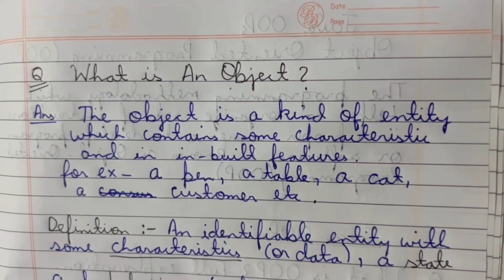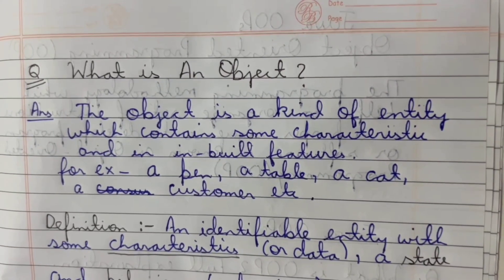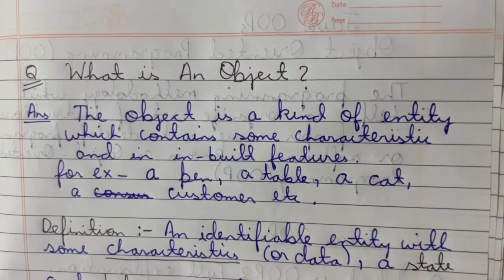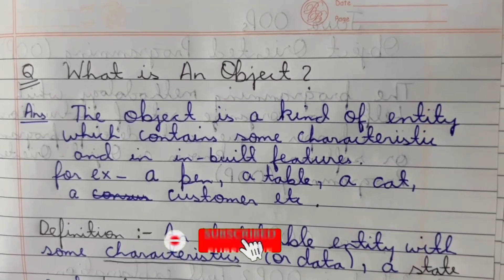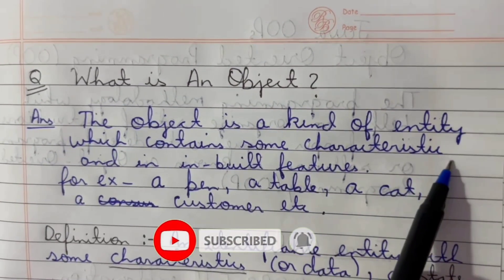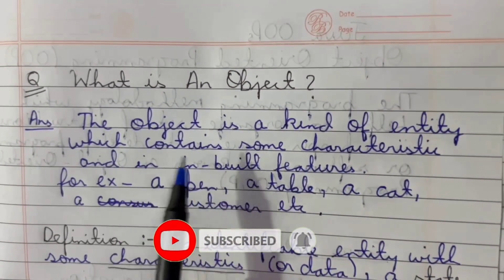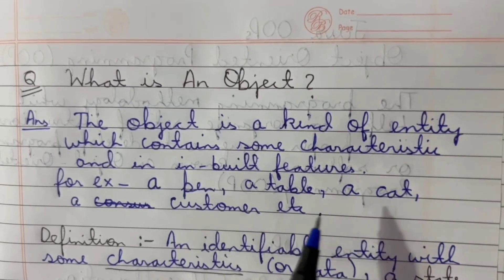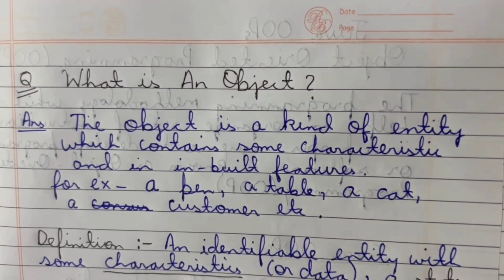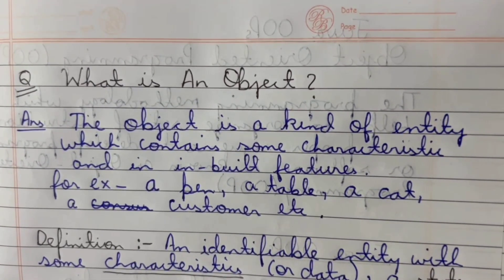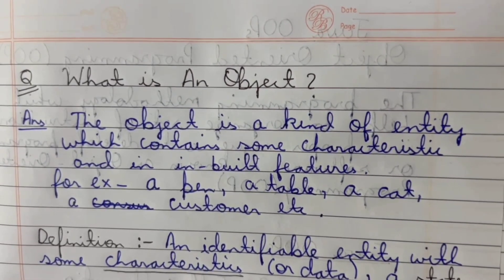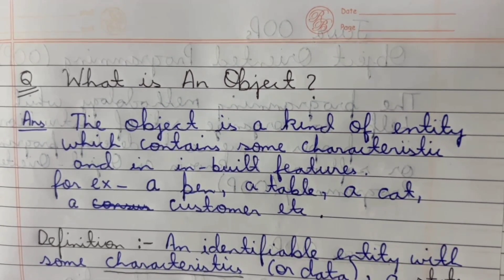Hello students, welcome to my YouTube channel. Today we are going to study what is an object. An object is a kind of entity which contains some characteristic and inbuilt feature. Everything in this real world is an object — for example, a pen, a table, a cat, a customer, etc.